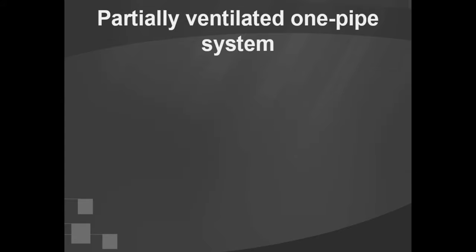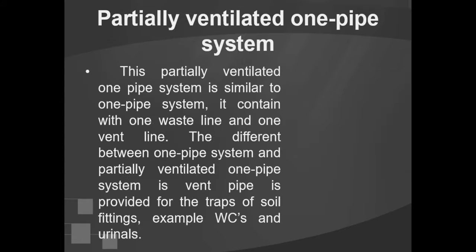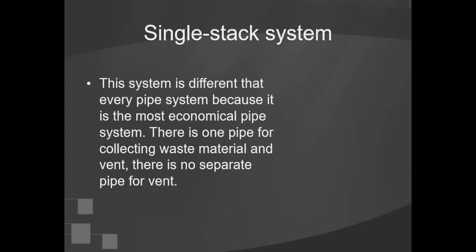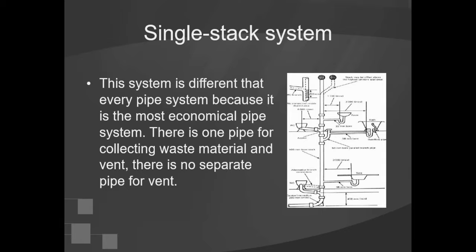The partially ventilated one pipe system is similar to the one pipe system, containing one waste line and one vent line. The difference is that a vent pipe is provided for the traps of soil fittings such as WCs and urinals. The single stack system is different from every other pipe system because it is the most economical. There is one pipe for collecting waste material and venting — there is no separate pipe for vent.